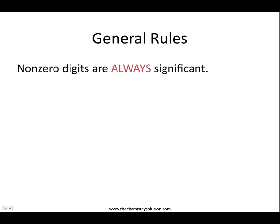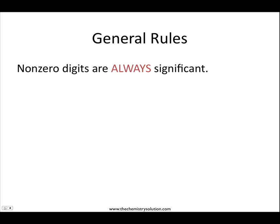There are some general rules that we need to keep in mind when trying to determine the number of significant figures. The first is that non-zero digits are always significant. If non-zero digits are always significant, that must mean that zeros may or may not be significant. So let's talk about some rules pertaining to zeros.